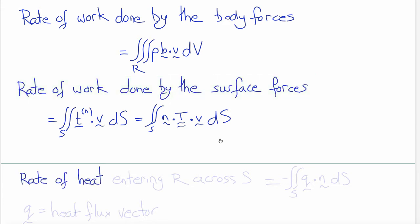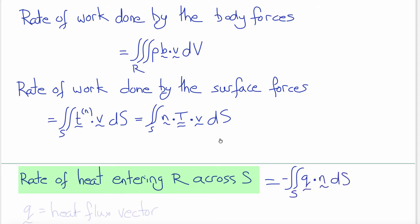The rate of heat entering the region R across the boundary S equals the negative of the surface integral of Q dot N dS, where Q is the heat flux vector and N is the outward normal to the surface. Therefore Q dot N is the outward heat flux, and negative of the surface integral of Q dot N is the total rate of heat entering.